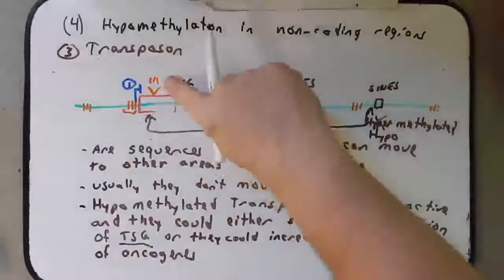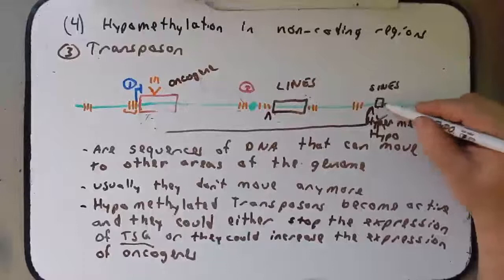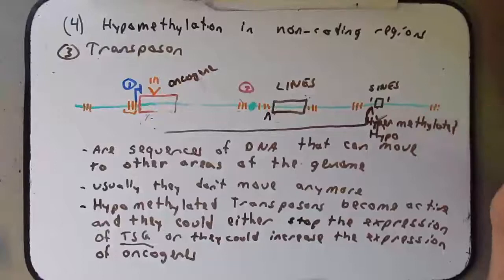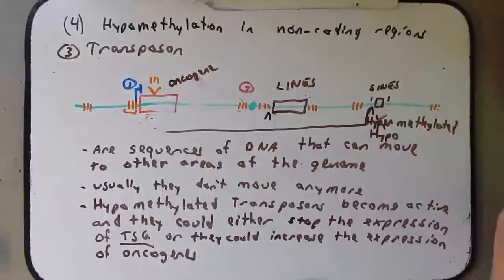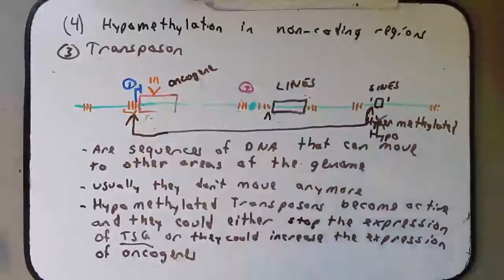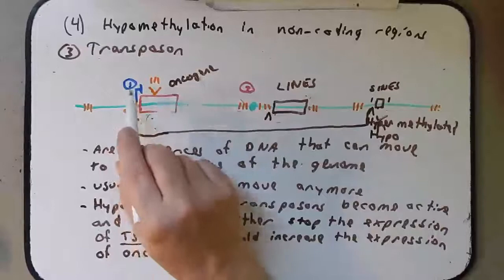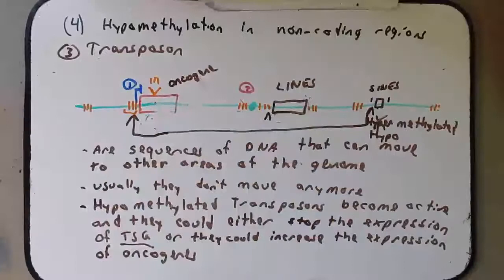So how could it possibly activate an oncogene? When these transposons leave the genome, they will often take with them a sequence of DNA around them. You could imagine — though it's less likely — that part of that sequence is an active promoter. And if it were to happen to pop right in front of a proto-oncogene, carrying with it an active promoter, you could see how that active promoter could take over the expression of this oncogene and cause it to be expressed constitutively.